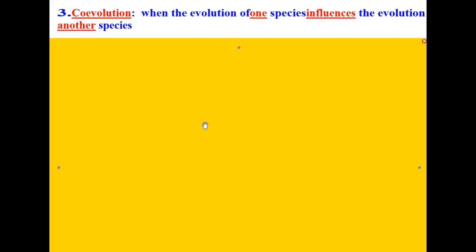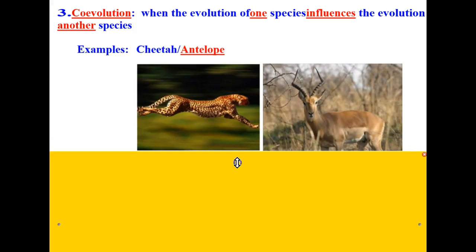Another specific example of evolution is co-evolution. Co-evolution is when the evolution of one species influences the evolution of another species. A couple great examples of this are the cheetah and the antelope. As the antelope developed more speed, the cheetah evolved to also have more speed so that it as a predator could continue to catch its prey.